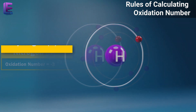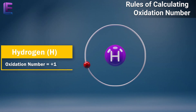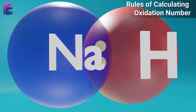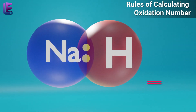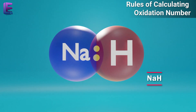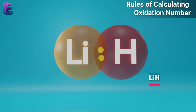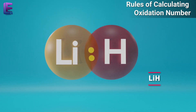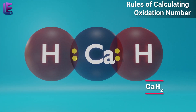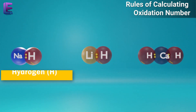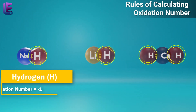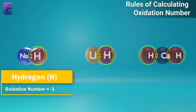Hydrogen has an oxidation number of plus one in most compounds. However, NaH, LiH, and CaH2 contain hydrogen with an oxidation number of minus one.